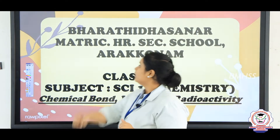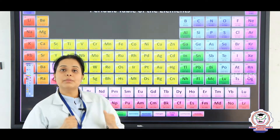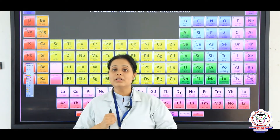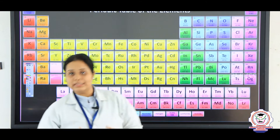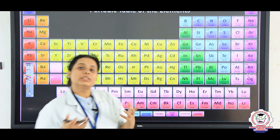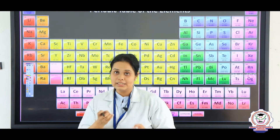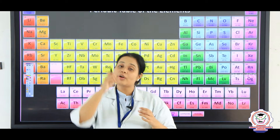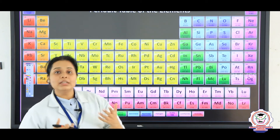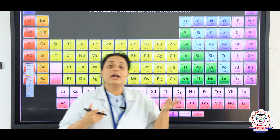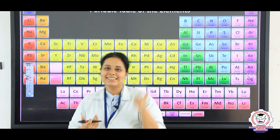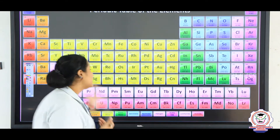In the previous session we have discussed about the periodic table and the chemical bonding between elements. In this lesson we are going to see how the ions are formed, that is how the electron will be removed and how the electron will be added so that there is formation of two ions.